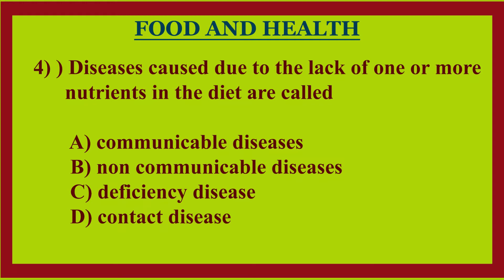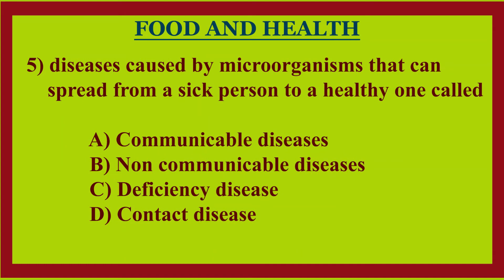Fourth question: diseases caused due to the lack of one or more nutrients in the diet are called — option A: communicable diseases, option B: non-communicable diseases, option C: deficiency diseases, option D: contact diseases. Answer: option C, deficiency diseases.